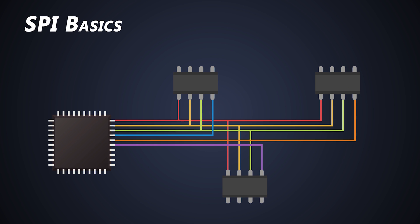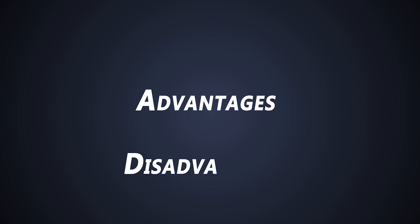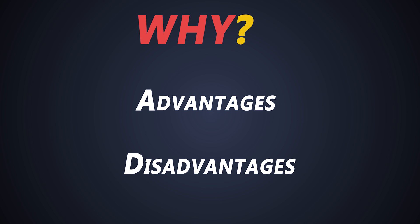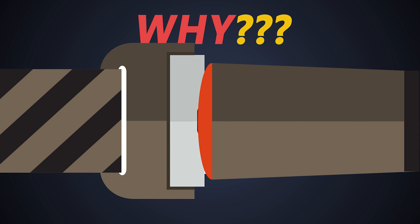Hey guys, welcome to another video from Foolish Engineer. Last time we saw the basics, different modes, and how data travels in the SPI communication. This time we'll see the advantages and disadvantages with answers to why. This is going to be an interesting video, so let's go for a ride.